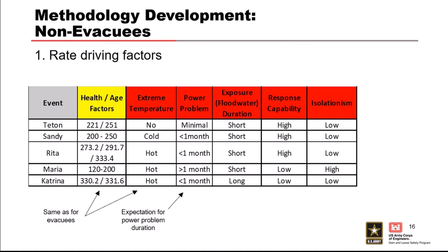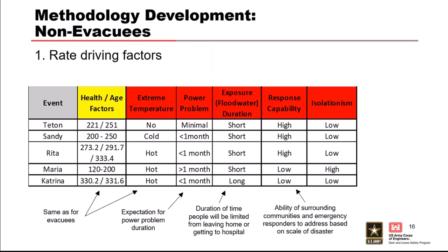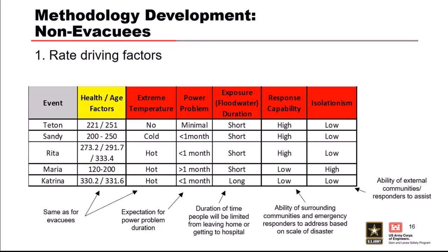Using the same health and age and extreme temperature from the evacuees group, plus expectation for power problem and duration — we're trying to figure out how long power might be out. Duration of time people will be unable to leave home to get to a hospital. Ability of surrounding communities and emergency responders to address based on scale of the disaster. If the disaster is really big, it might limit the ability of neighboring communities to help. Isolationism is more about being cut off — it could be that people nearby could help you, but you're totally cut off so they can't get to you.